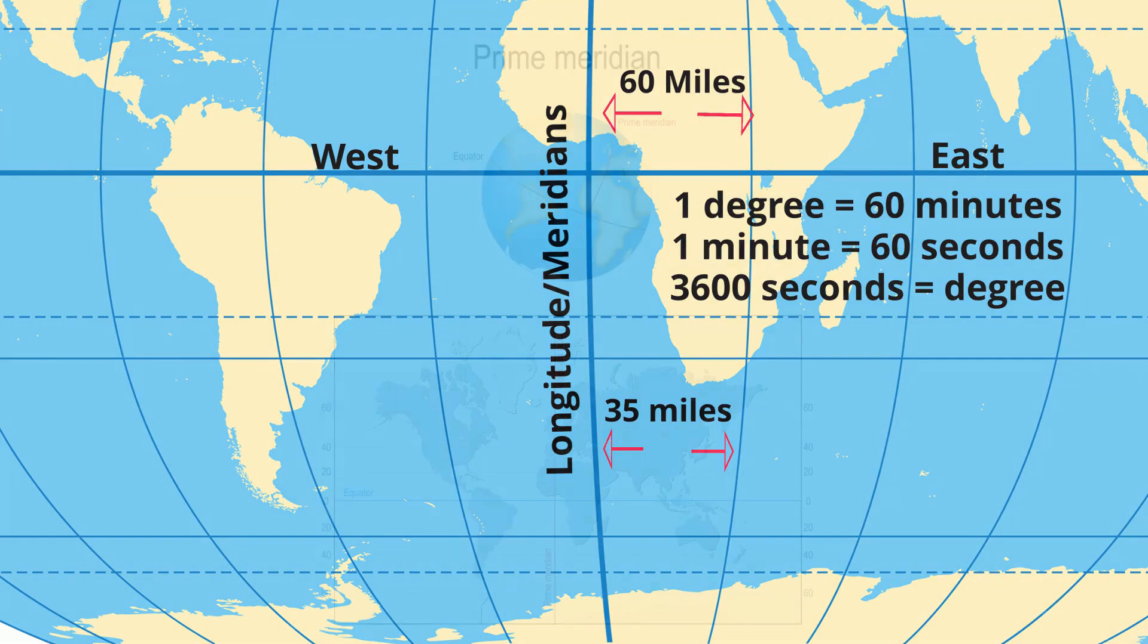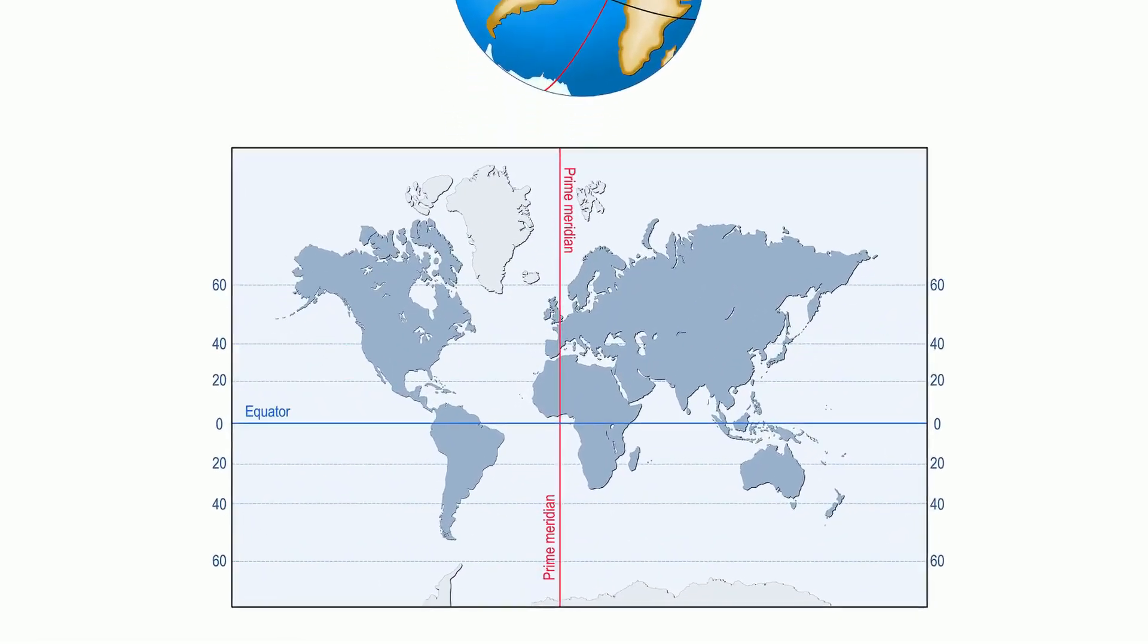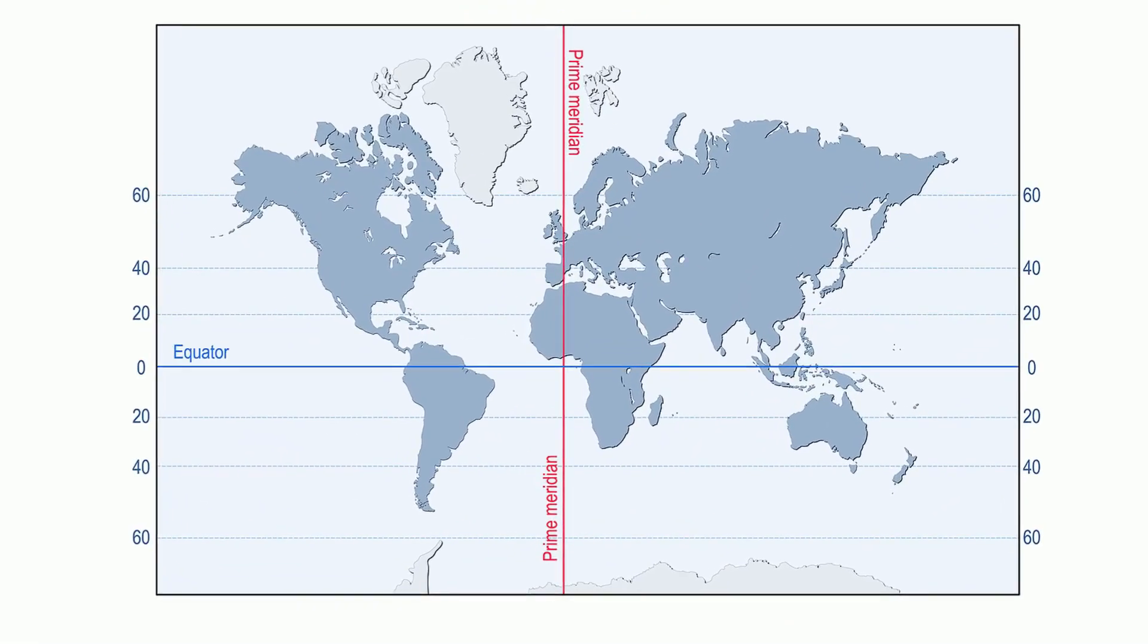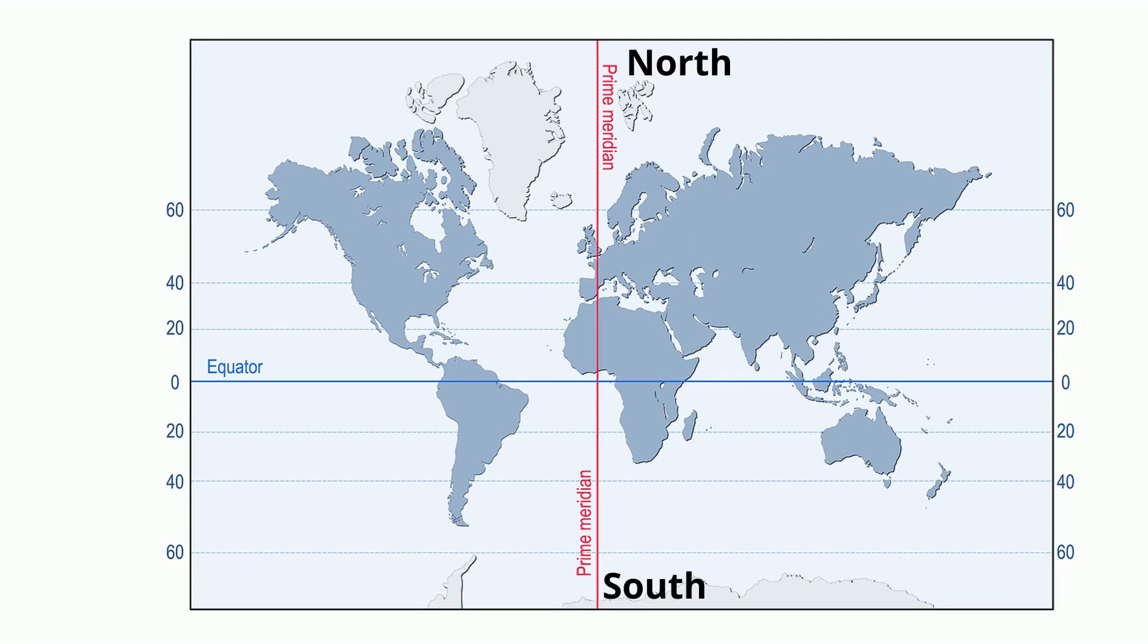The starting point is the prime meridian, and it is found at zero degrees, and it passes through Greenwich, which is near London. If north is at the top, then to the left of the prime meridian is west, and to the right is east.